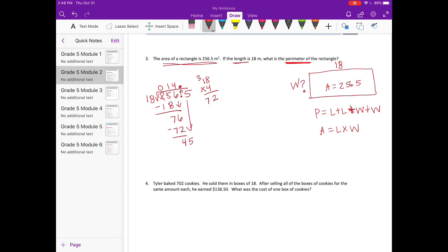18 could go into 45. Let's try... I think 3 would be too big. 2... 36. Yeah, if I added 18 to that, it would be too big. So it can only go in twice. Subtract and we get 9. Now I'm going to add a 0 and keep going. And 18 can go into 90. Well, this was 18 times 4, so let's try 18 times 5. 8 times 5 is 40. Yeah, so it can go in 5 times. So we get 14 and 25 hundredths as the width.